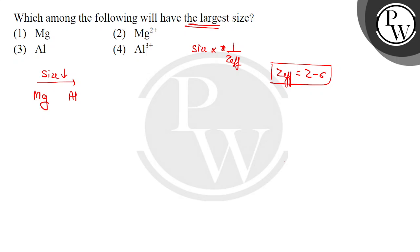So the size is decreasing. Here we have to know that the size of Mg will be more than aluminum.